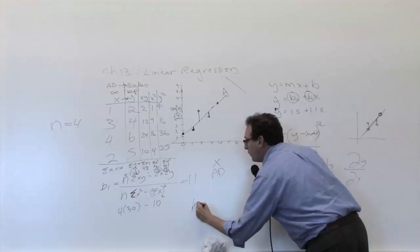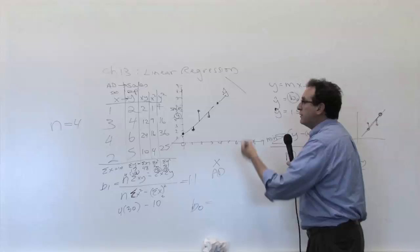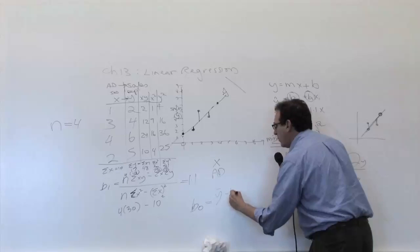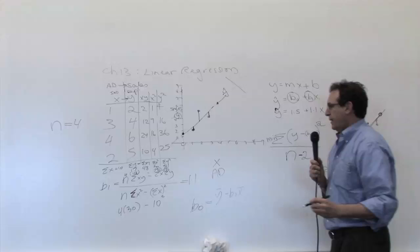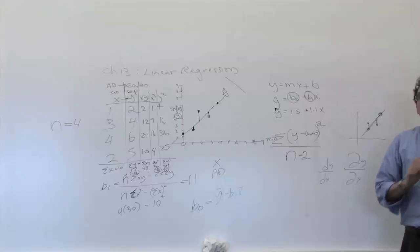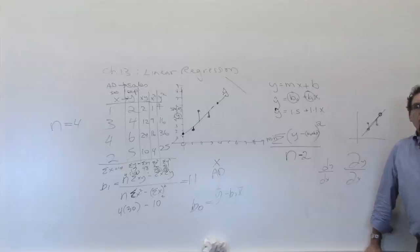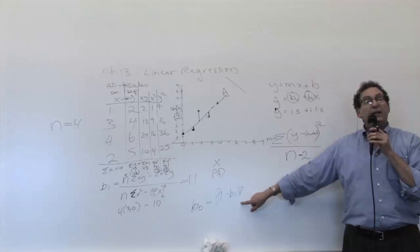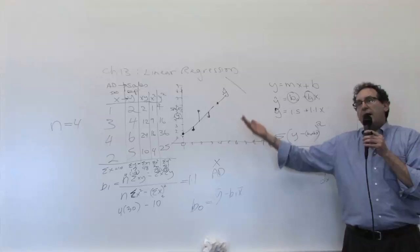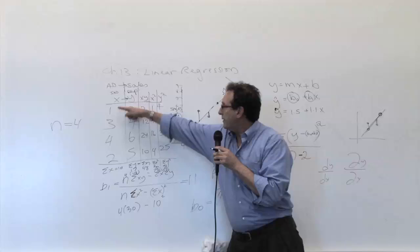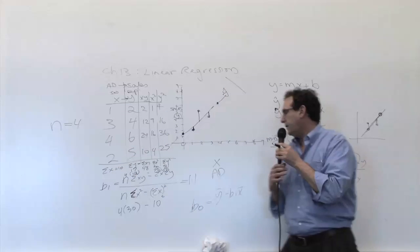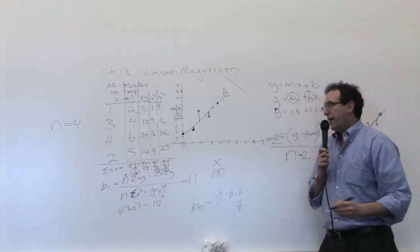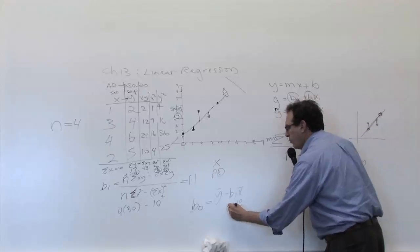It turns out you calculate the b1 before you calculate the b0, because the b0 is a function of the b1. It's y-hat bar minus b1 times x bar. Now, the symbol x bar stands for the average of the x's, which means it's going to be this total divided by 4 — so it's going to be 1.5. And the b1 we just said is 1.1.